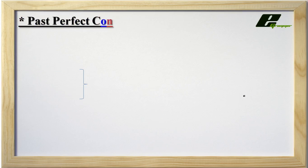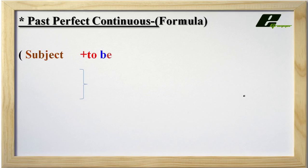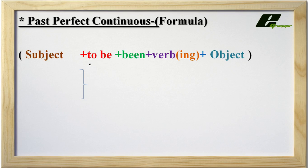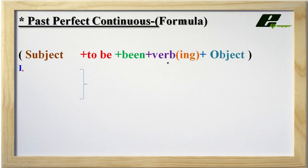Let us jump to the formula of Past Perfect Continuous Tense. We have seen the eight types of subjects. Then comes 'to be' — in Past Perfect Continuous Tense, 'to be' means the helping verb. We are going to use 'had' as a helping verb. Then 'being' shows that the action was going on for a long or short period of time. Then comes the verb — we use the base form of the verb, also known as V1, and add 'ing' to it. And then comes the object.